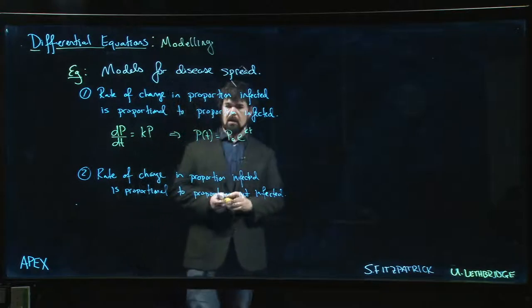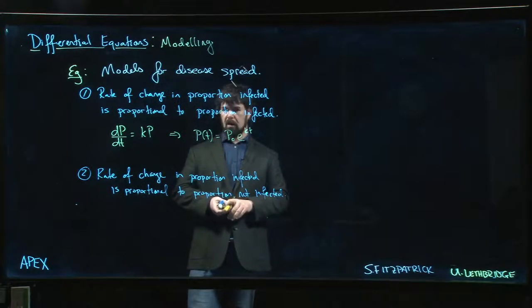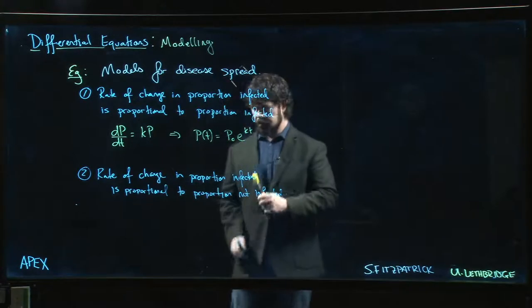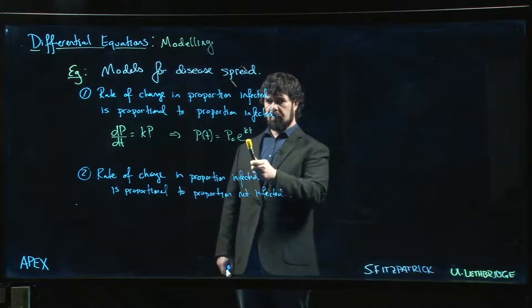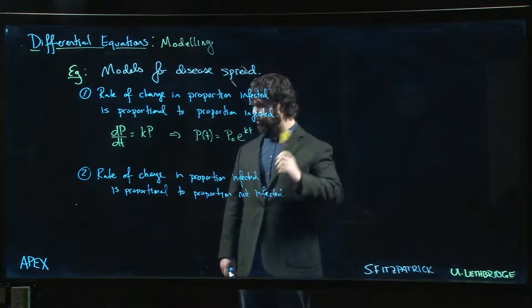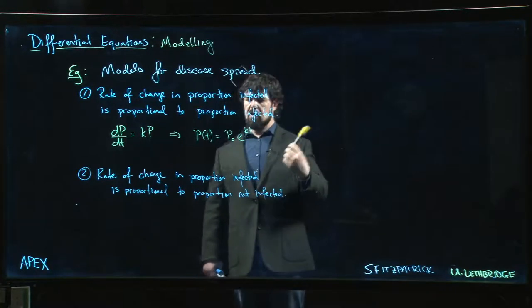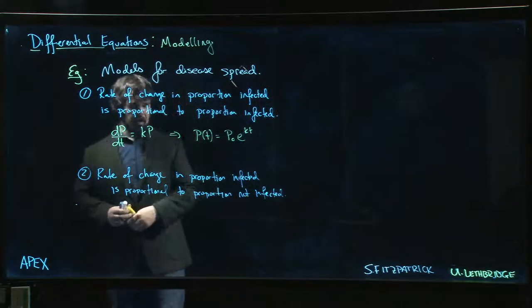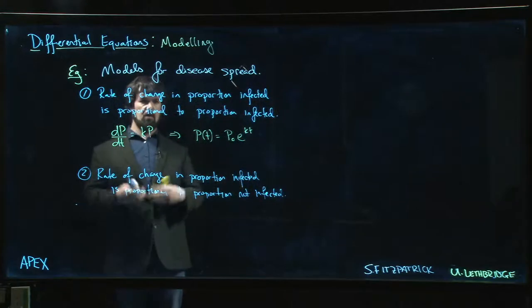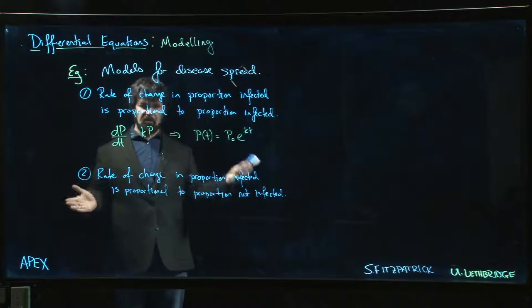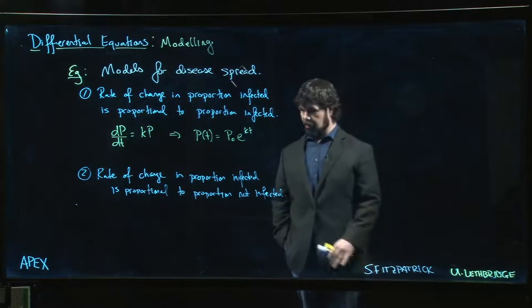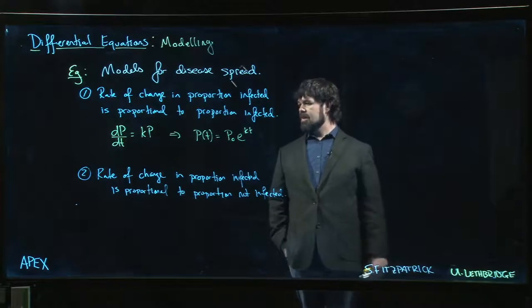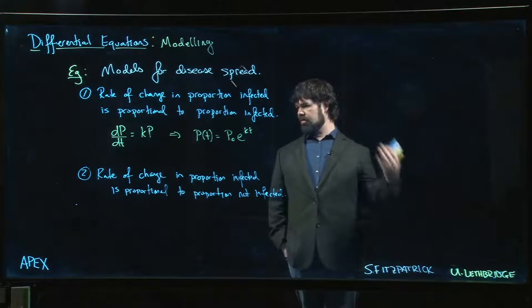But this is problematic because exponential growth is not bounded—it goes on forever. But a proportion is not allowed to exceed one. A proportion is some number between zero and one, just like a percentage is between zero and a hundred. So it's not a very physical model.